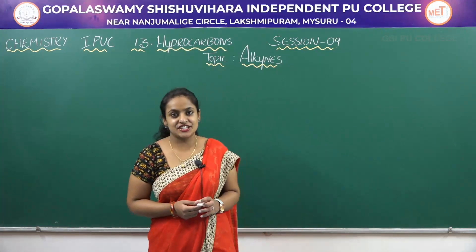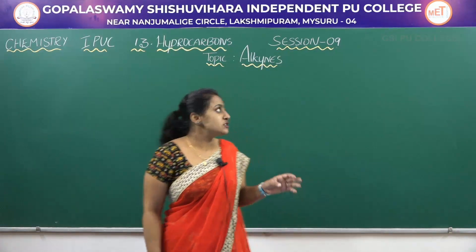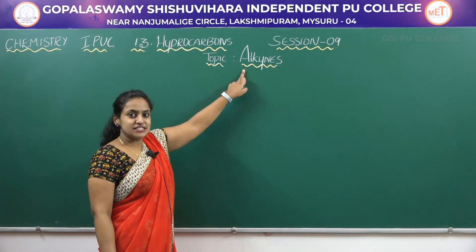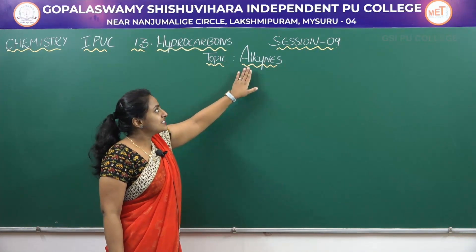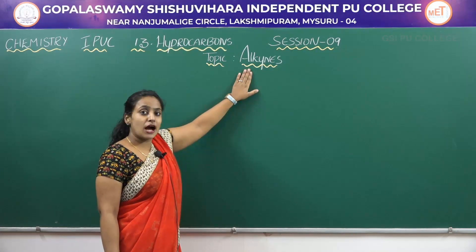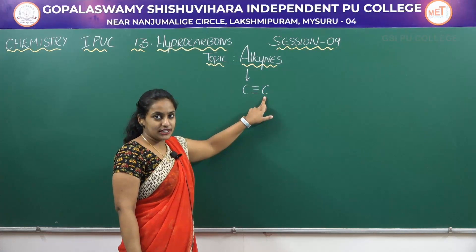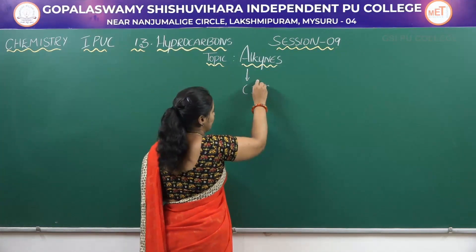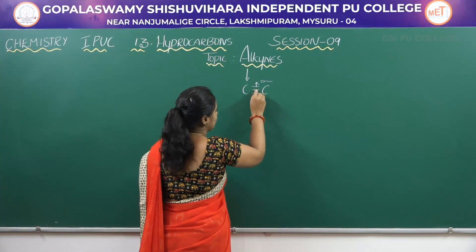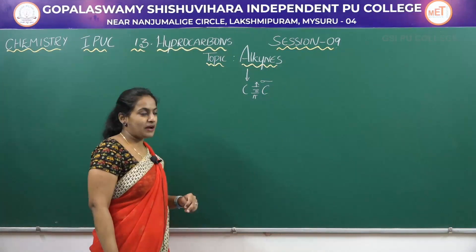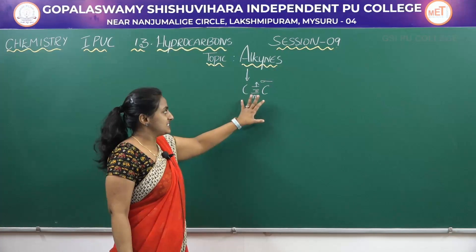Good morning students. In this session we are going to discuss about alkynes. These alkynes are unsaturated compounds. These alkynes contain a carbon-carbon triple bond. In the triple bond, one will be the sigma bond and the other two will be pi bonds. One sigma bond and two pi bonds — this is the structure of alkynes.